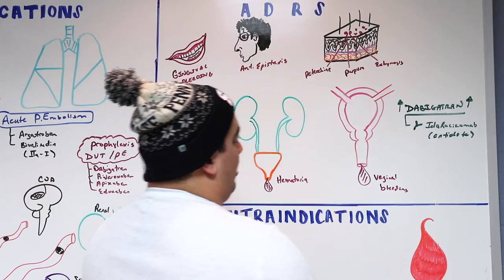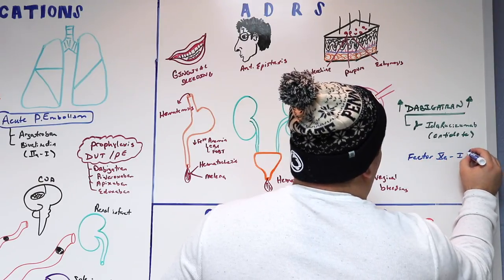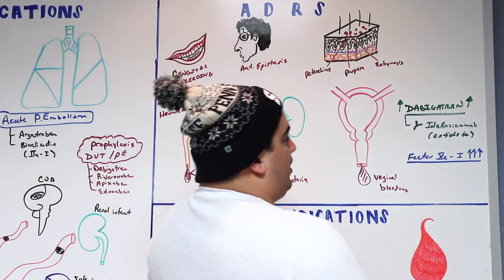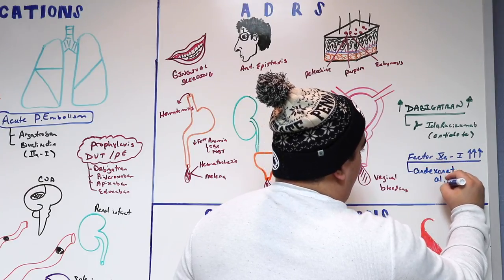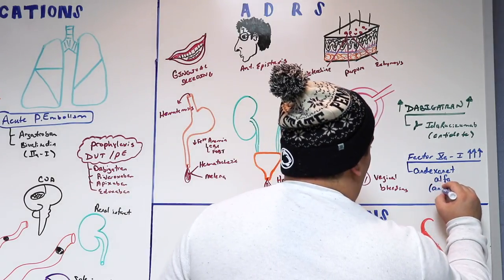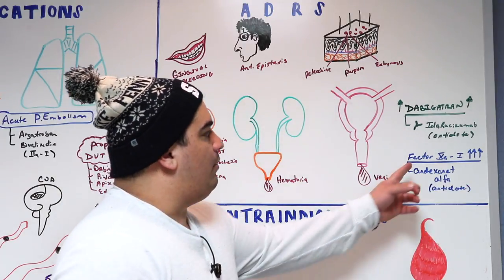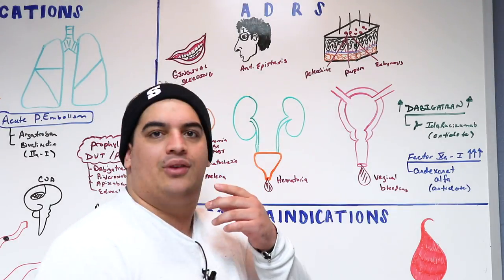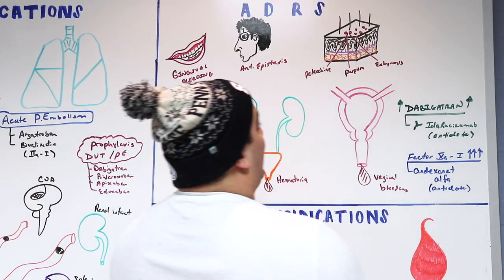For factor 10a inhibitors — apixaban, edoxaban, rivaroxaban — the reversal agent is andexanet alfa (spelled without a 'ph'), which is believed to reverse the anticoagulant effect of excessive factor 10a inhibitors. This still leaves argatroban and bivalirudin without a specific antidote.